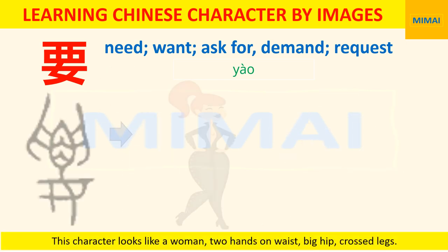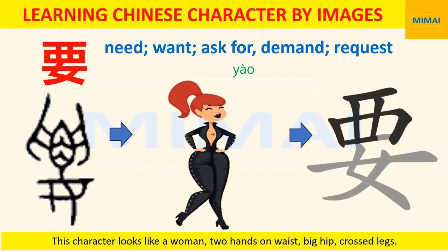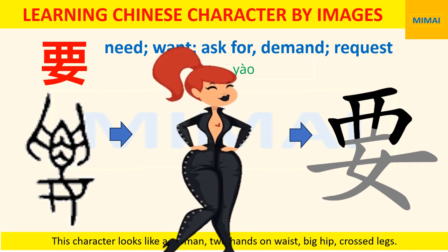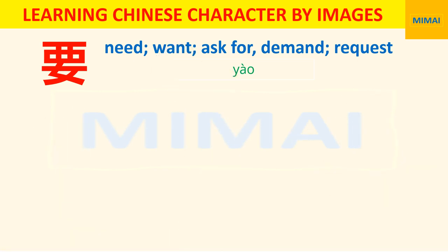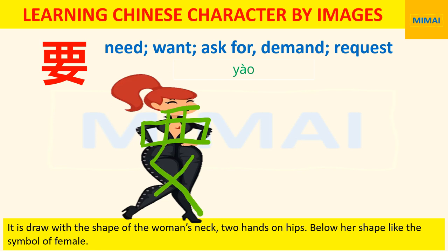This character looks like a woman with two hands on her waist, big hips, and crossed legs — it implies desire or need. It is drawn with the shape of the woman's neck, two hands on hips, and below her shape is the symbol of female.